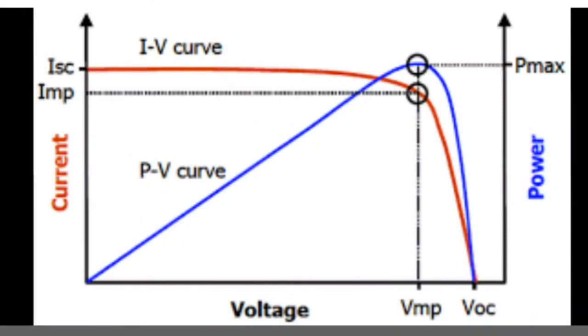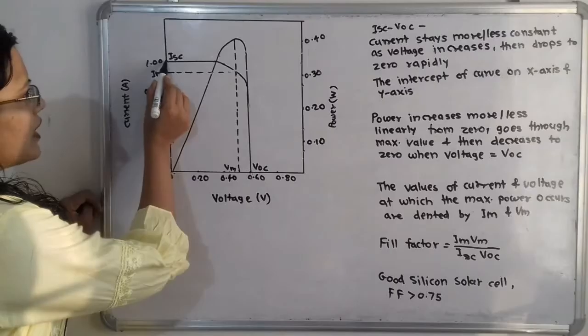And the intercept on the x-axis here, that is on the current, so here the short circuit current, that is Isc. So this intercept is called as Isc, that is short circuit current, and open circuit voltage.